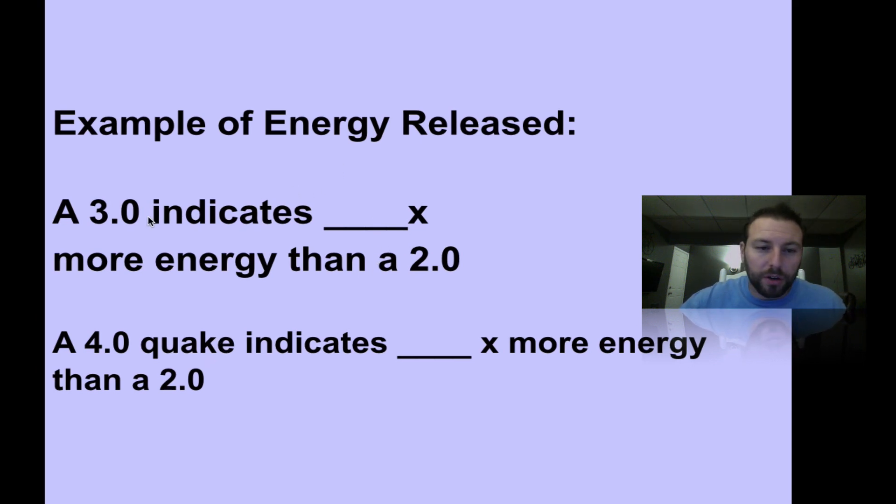A 3.0 earthquake is going to release a certain amount of more energy than a 2.0. Because it's only an increase of one, it's a tenfold increase. A 4.0 to a 2.0 is a twofold increase, so here it would actually be a hundred times more energy. You can see how when we start increasing the magnitude, the amount of energy released can be huge.